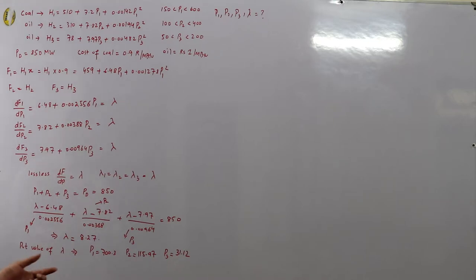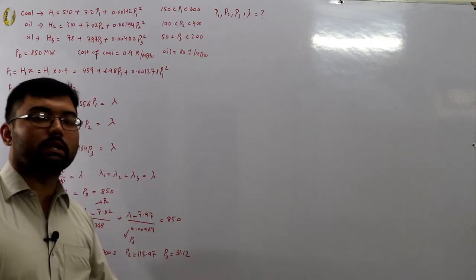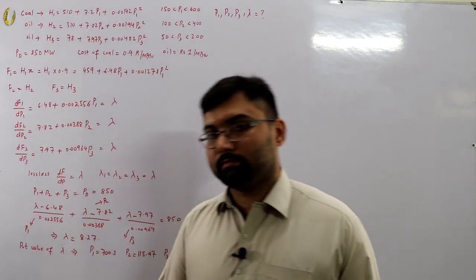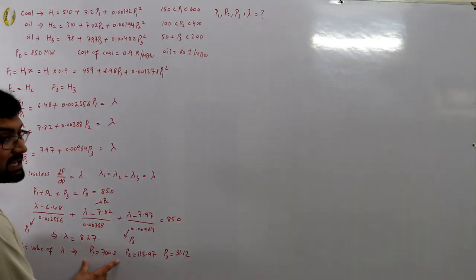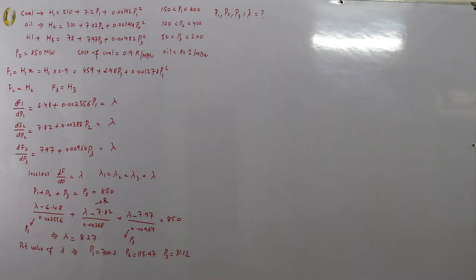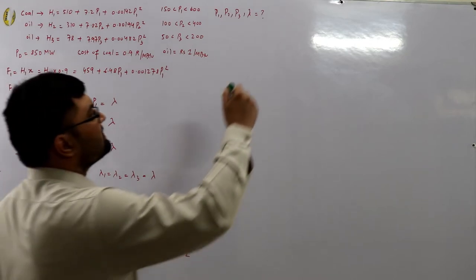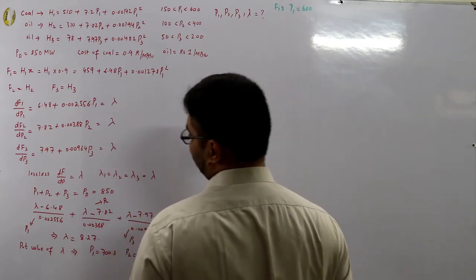Checking the economic ranges: p1 = 700.3 MW exceeds the maximum of 600 MW, and p3 = 31.12 MW is below the minimum of 50 MW — both violate the economic dispatch conditions. p2 lies within its range. Since p1 overshoots, we fix p1 to its maximum limit of 600 MW.